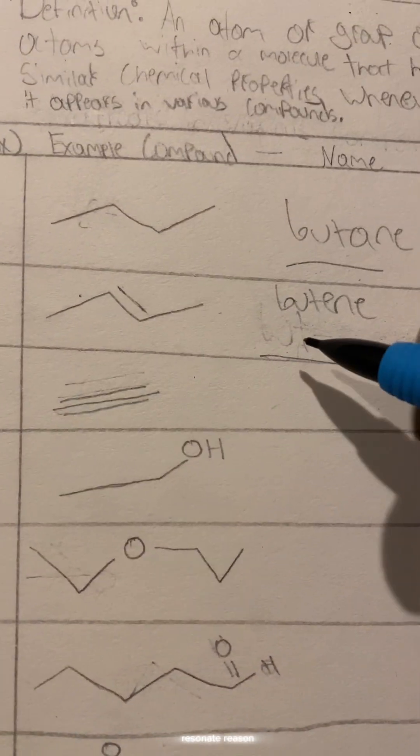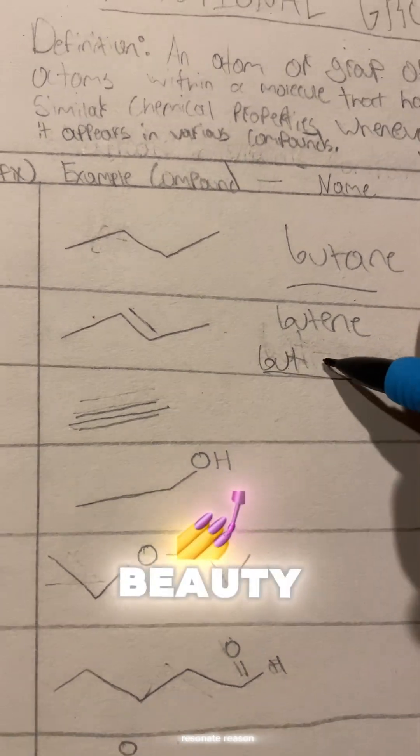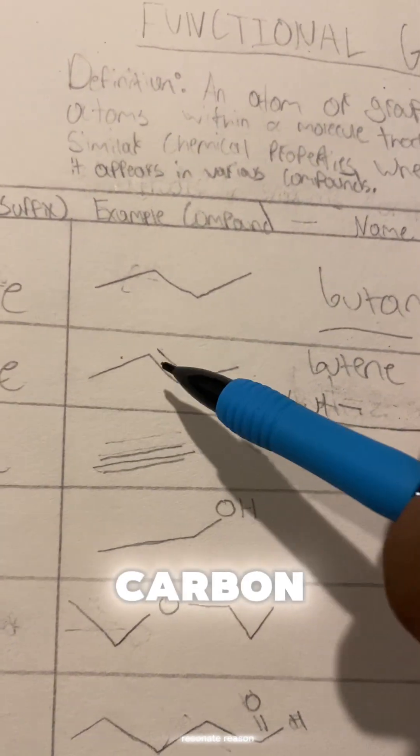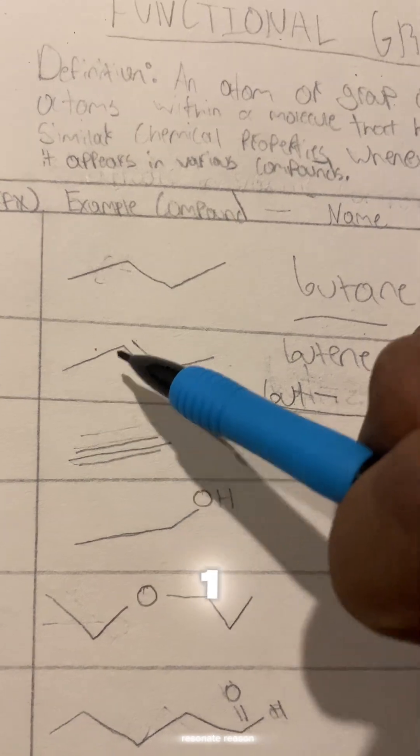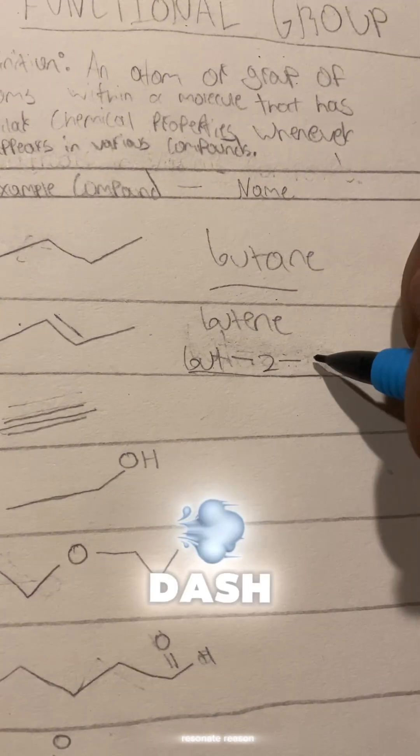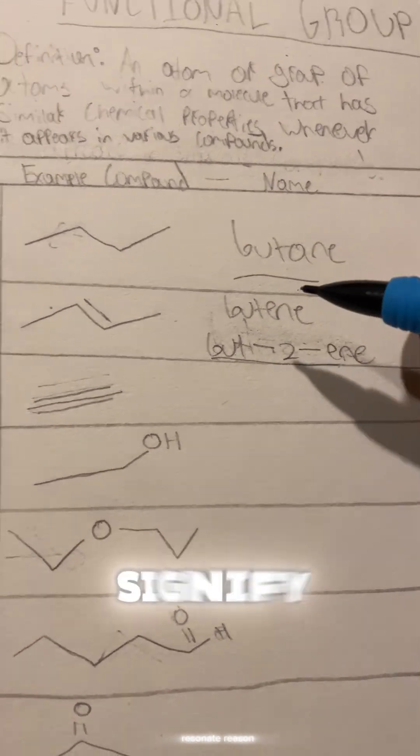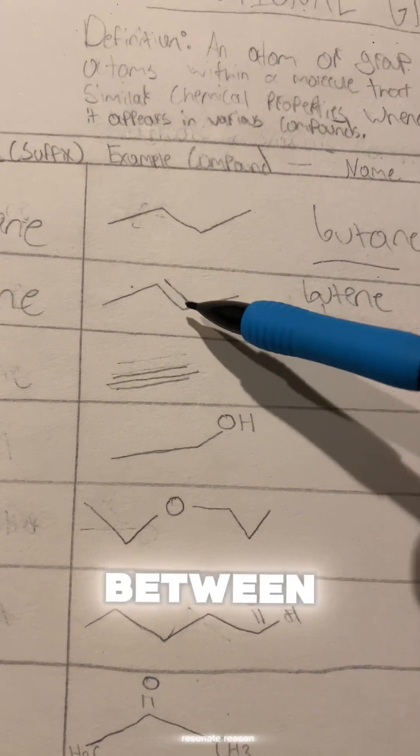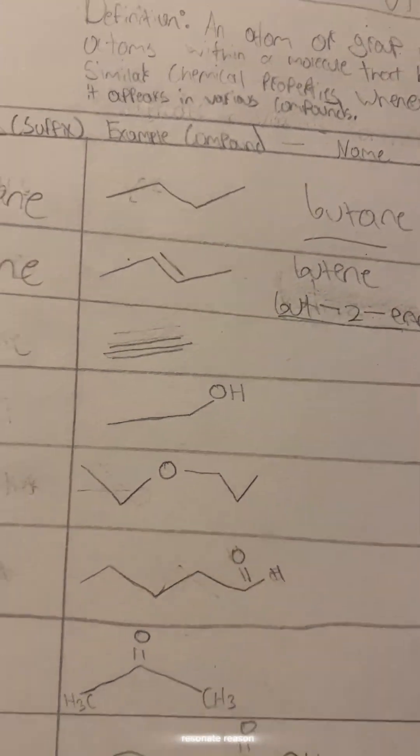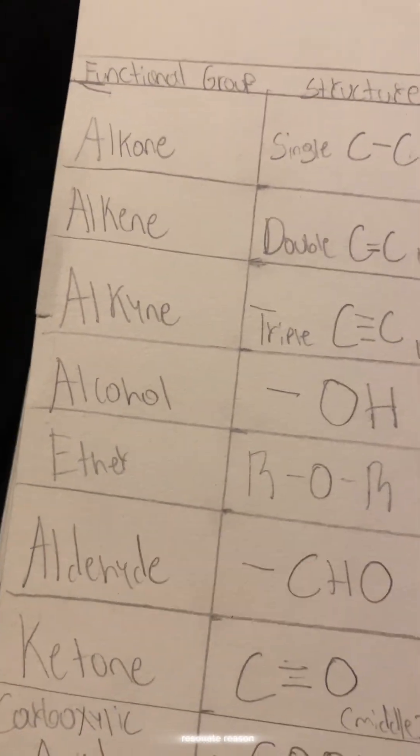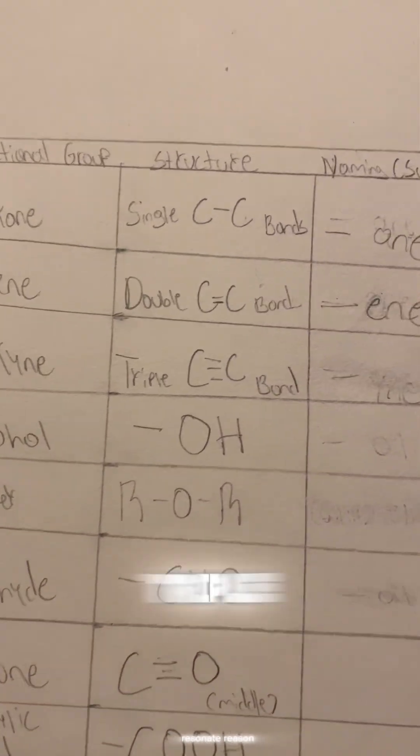You're going to find the carbon that the double bond comes off of, which is one, two—so 2-dash, and then you're going to put 'ene' to signify that a double bond happens between the second and third carbon. Alright, the next one up is called an alkyne, and basically an alkyne functional group is just a triple...